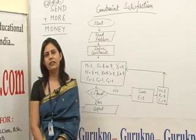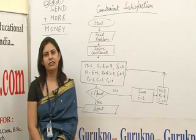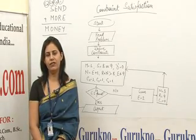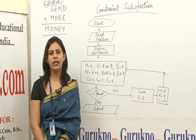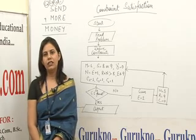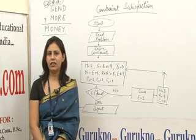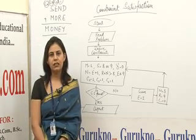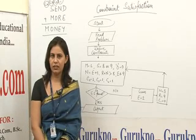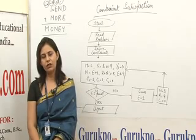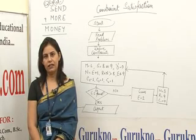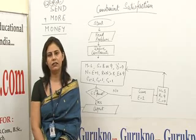We can see the basic workflow of constraint satisfaction as follows: firstly, we need to analyze the problem perfectly. Then we need to derive the constraints given in the problem. Then we need to derive a solution from the given constraints. Then we need to find whether we have reached the goal state. If we have not reached the goal state, then we need to make a guess.